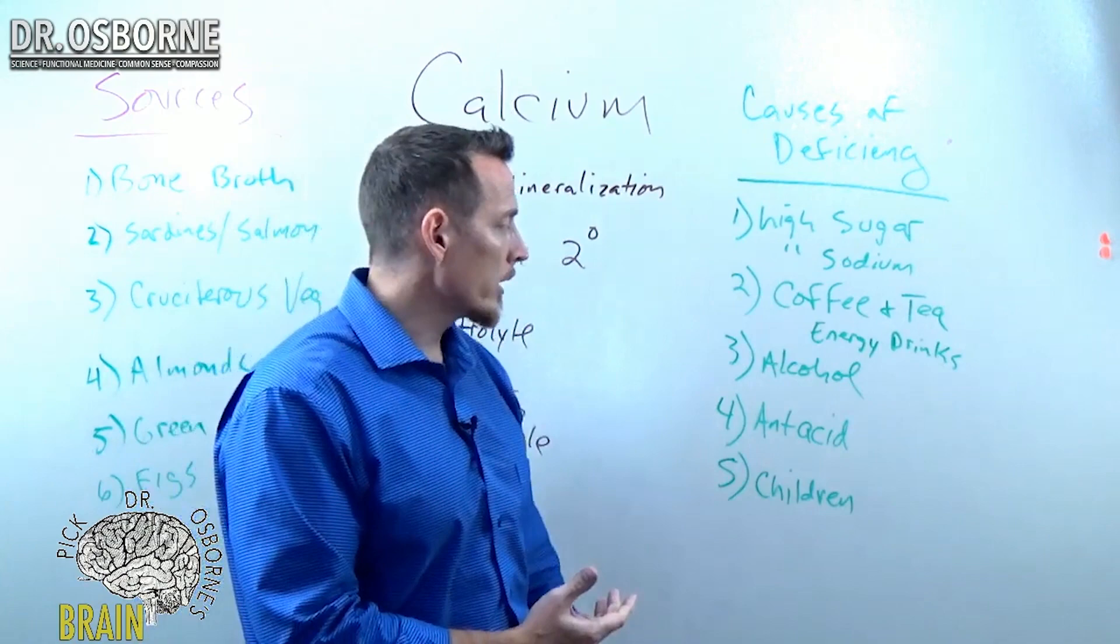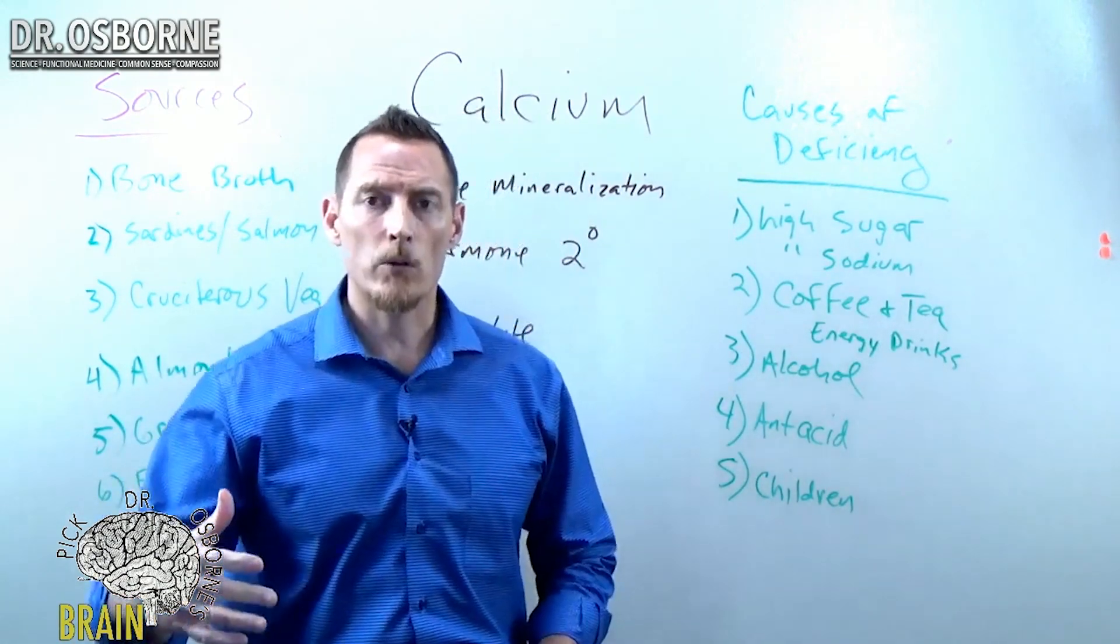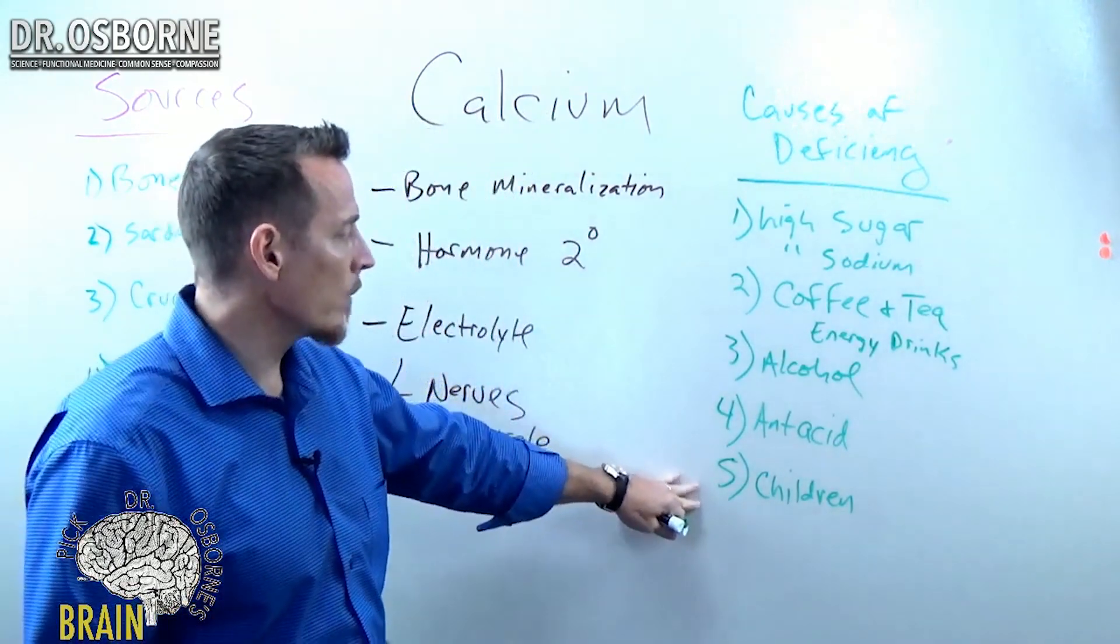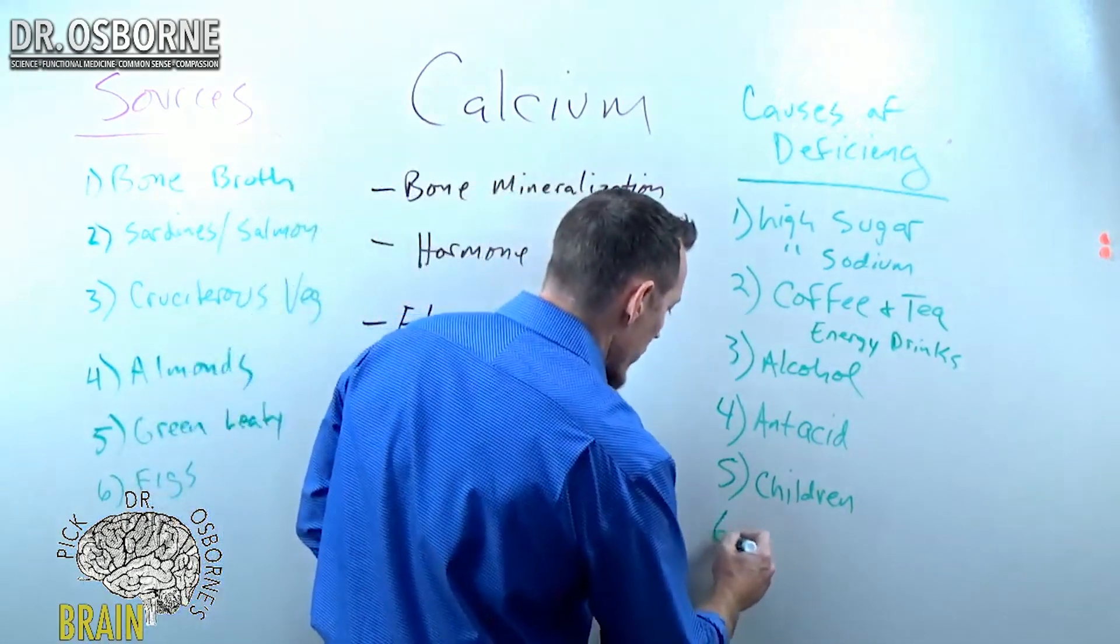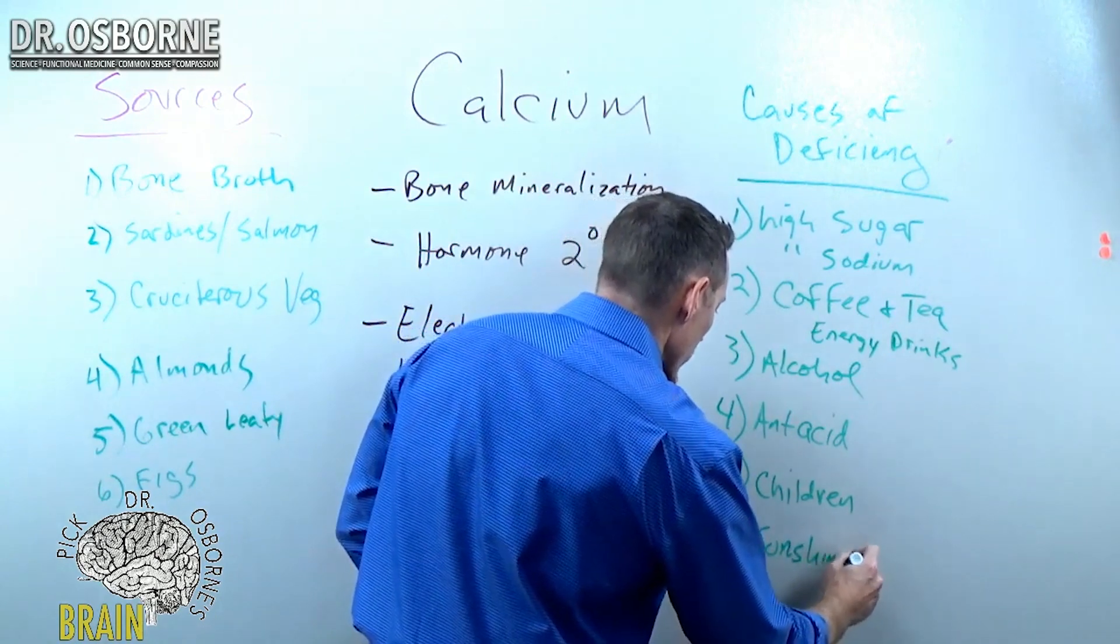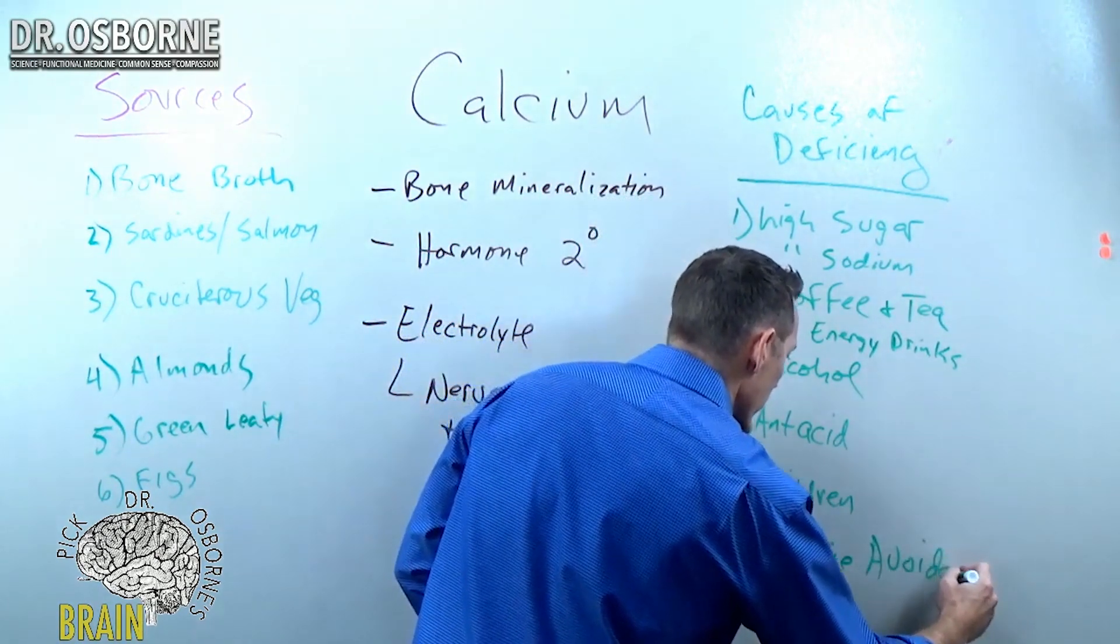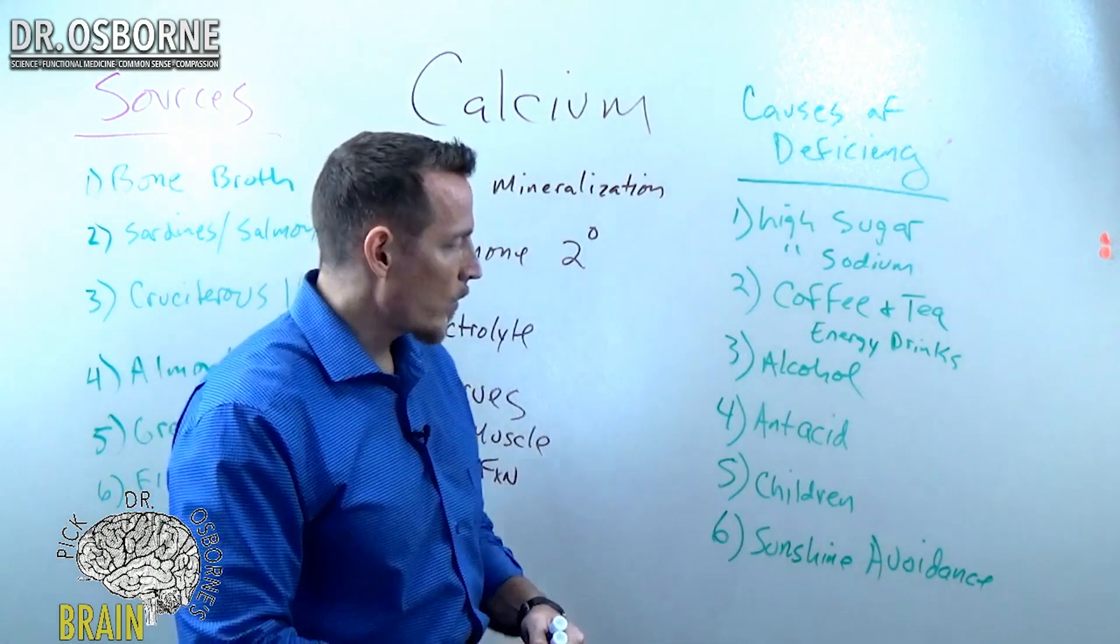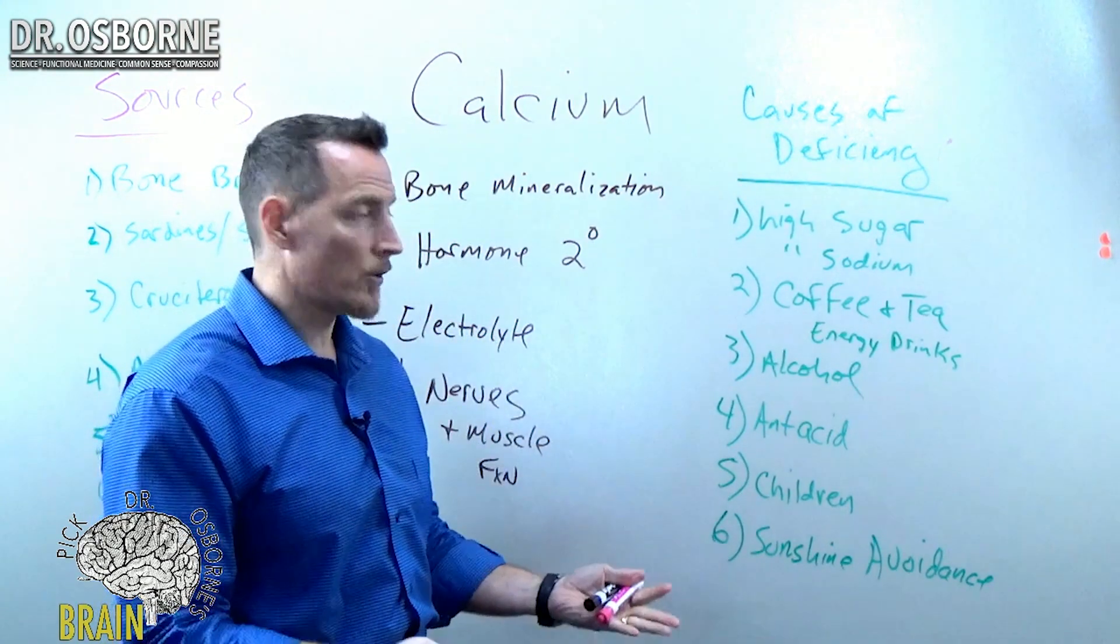But children are at really great risk predominantly because of their fast and expedient growth, especially after hitting those growth spurts. Other people at risk here are people that avoid sunshine. Sunshine avoidance can cause a major calcium problem. And again, we go back to some of the myths of what we've been told. One of them is that sunshine causes skin cancer, which, that's a ludicrous statement.